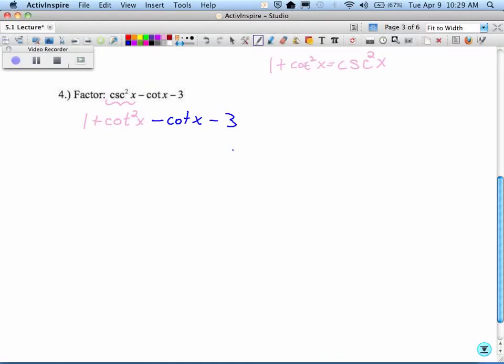So this would be cotangent squared of x first minus cotangent of x. And the only like terms, those are the only like terms, what's 1 minus 3? Negative 2. How does this factor?